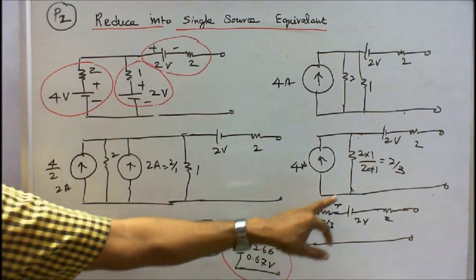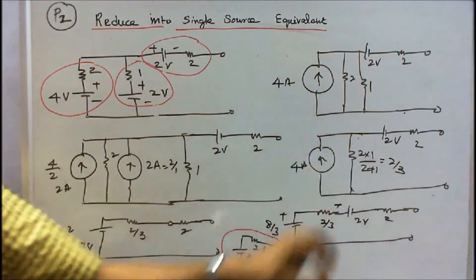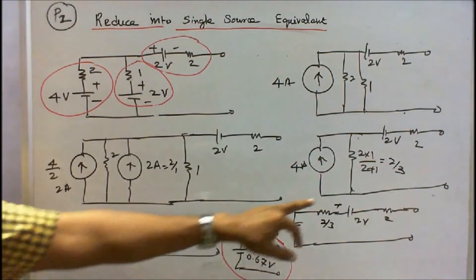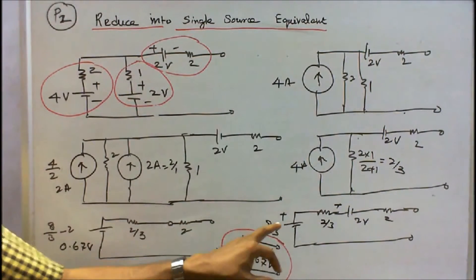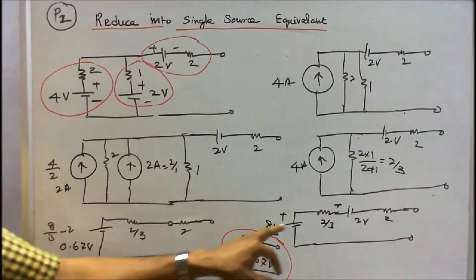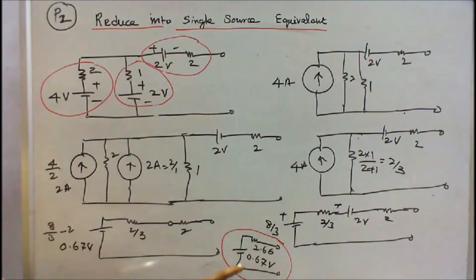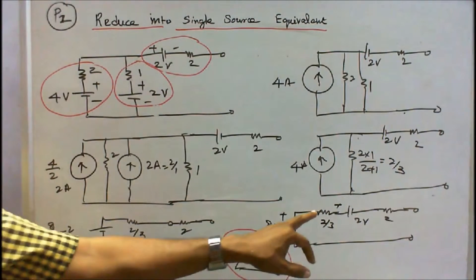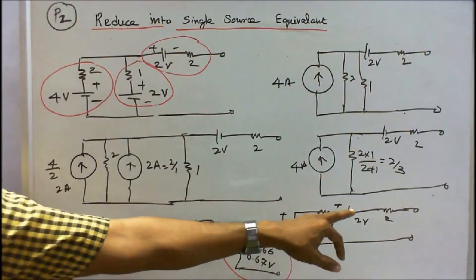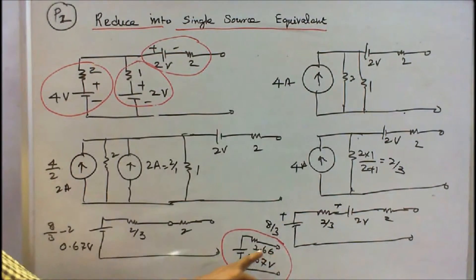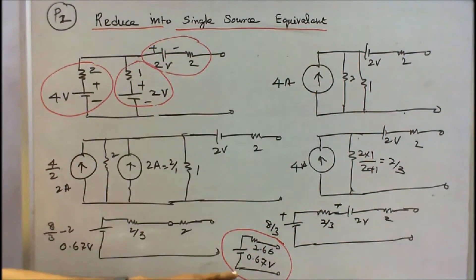This 2 volts is positive. Therefore there is a potential difference of 8 by 3 minus 2, that is equal to 0.67 volts. And the total resistance is 2 by 3 plus 2, that is equal to 2.66 ohms. This is the single source equivalent.